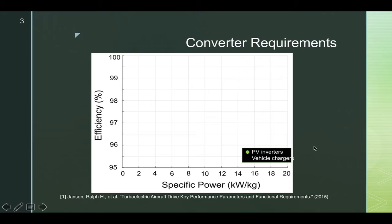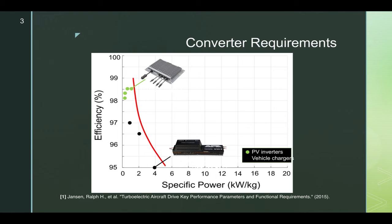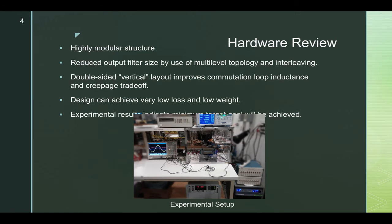When we think about the low weight and what specifications and alignment that we have to have, we have converter requirements. With the converter requirements, this is really important when it comes to efficiency. We have certain elements that you can see were actually outlined and where they fall on the map. Finally, we have the hardware review — the high modular structure and the reduced output filter size by use of multi-level topology and interleaving.